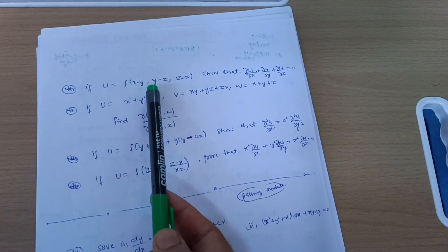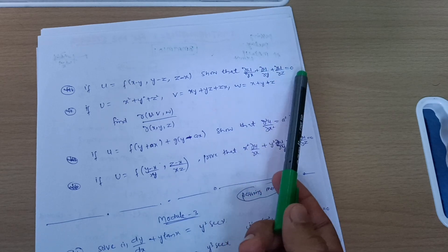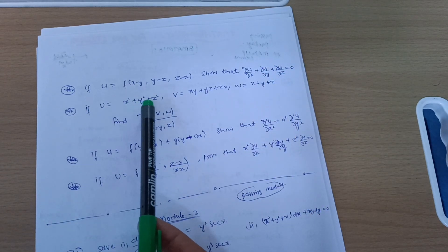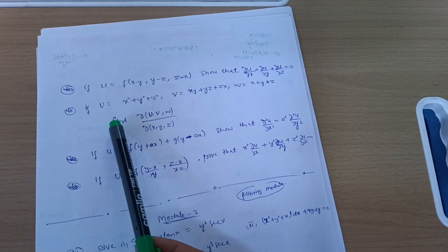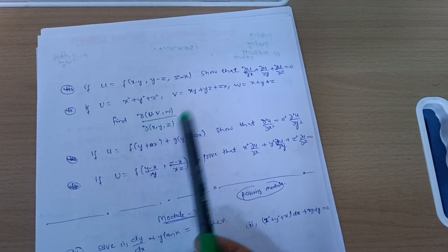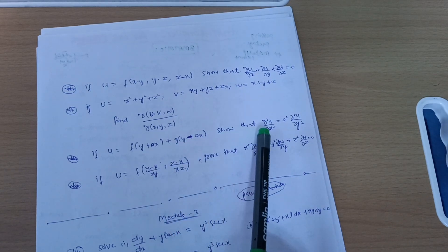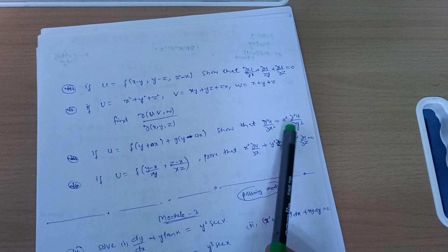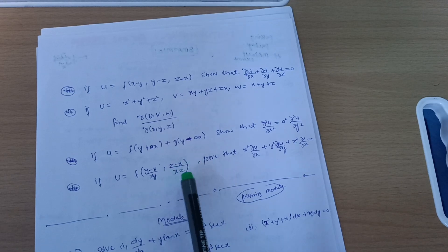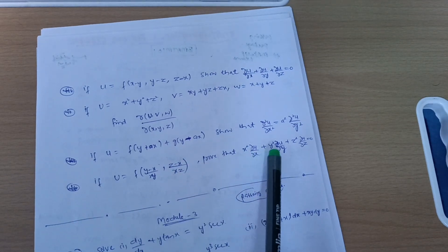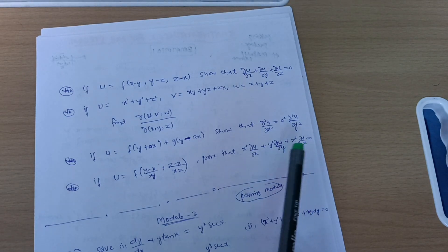For Jacobians: if u = f(x − y, y − z, z − x), show that ∂u/∂x + ∂u/∂y + ∂u/∂z = 0; if u = x² + y² + z², v = xy + yz + zx, w = x + y + z, find ∂(u,v,w)/∂(x,y,z); if u = f(y + ax) + g(y − ax), show that ∂²u/∂x² = a²·∂²u/∂y²; and if u = f((y−x)/xy, (z−x)/xz), prove that x²·∂u/∂x + y²·∂u/∂y + z²·∂u/∂z = 0. Do not miss these Jacobian problems.